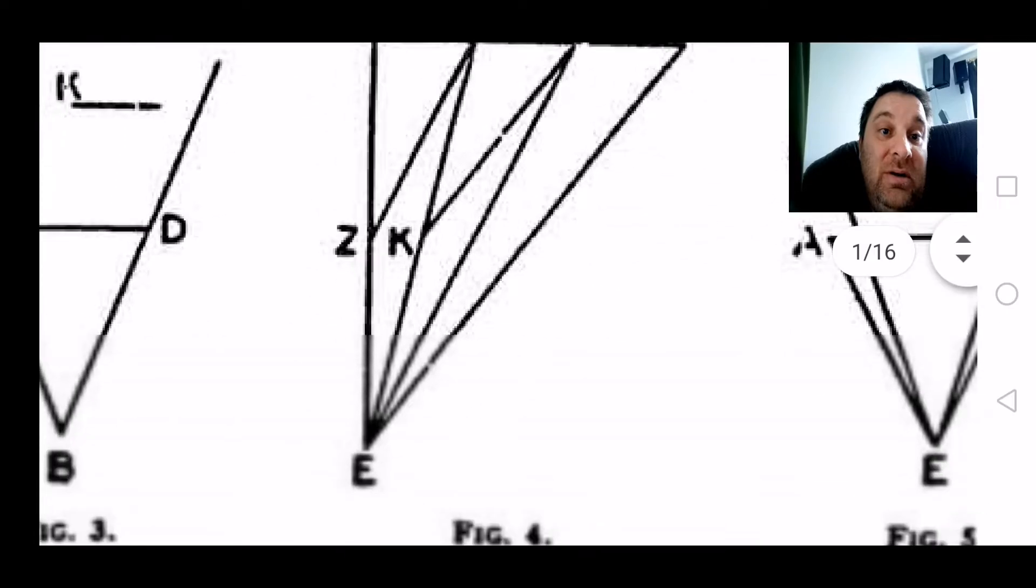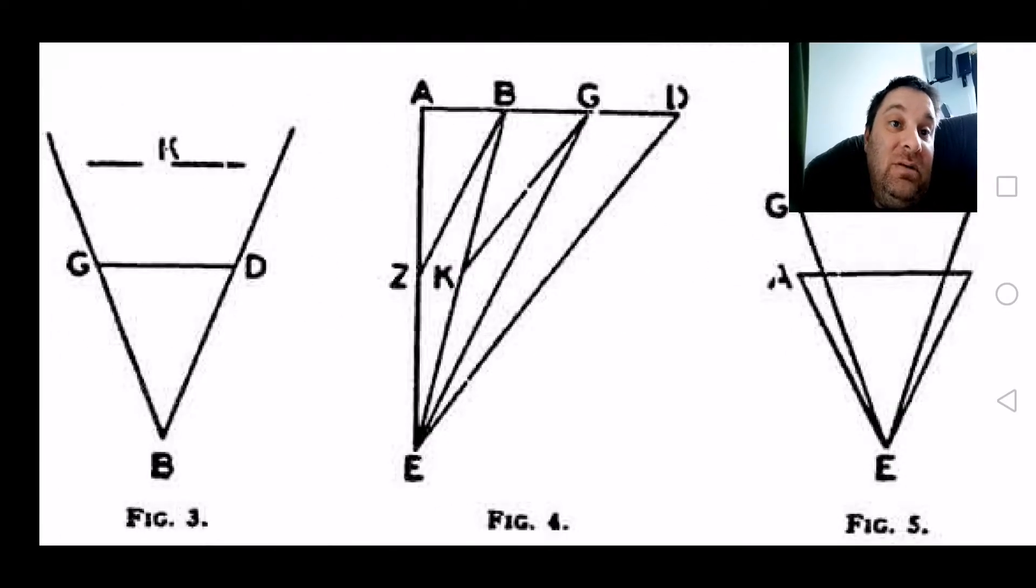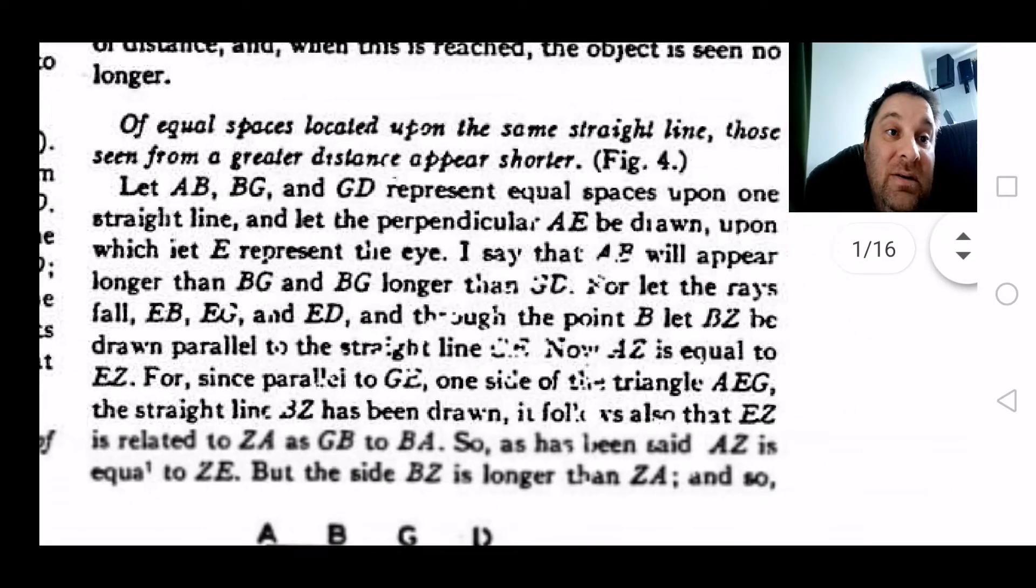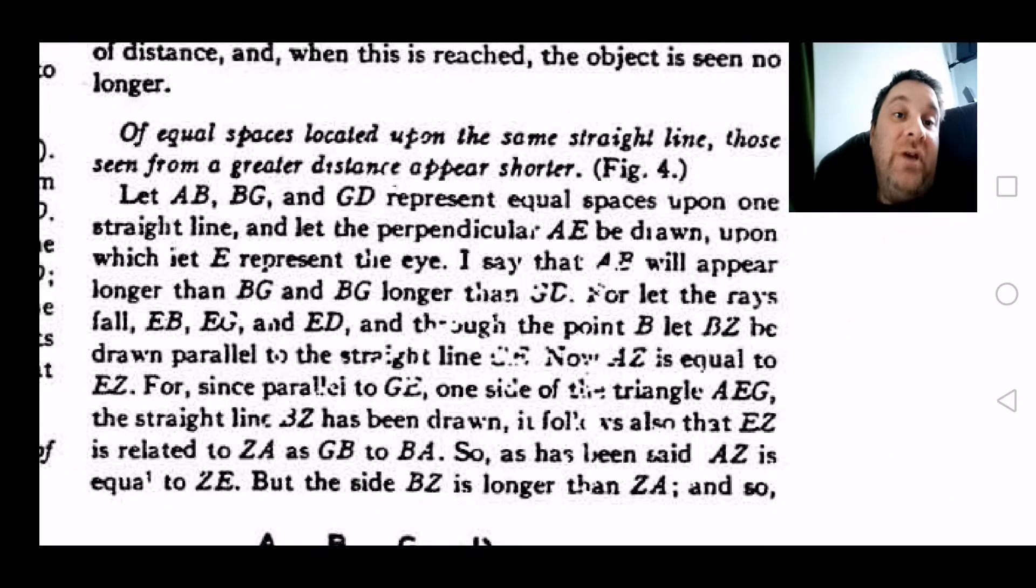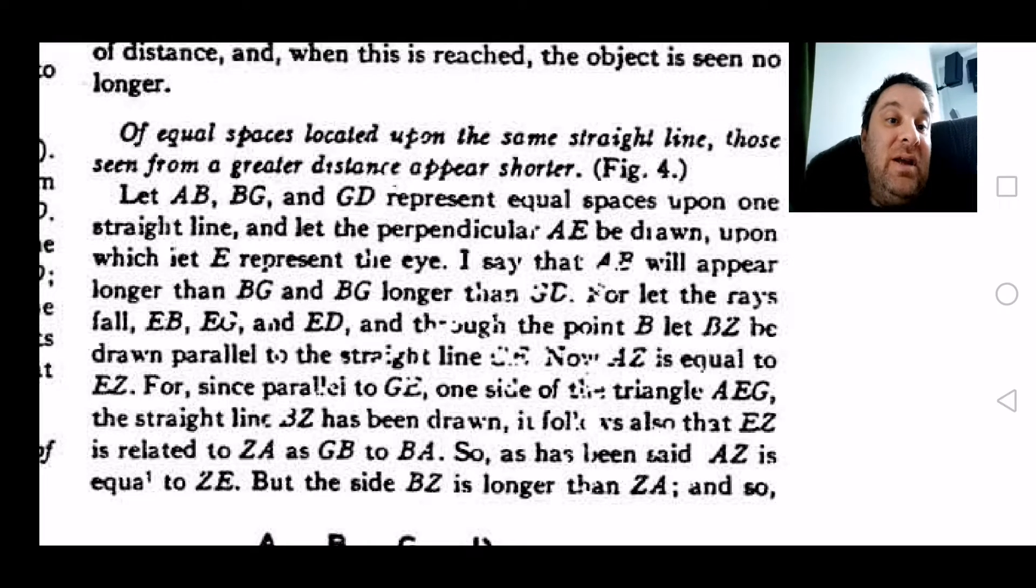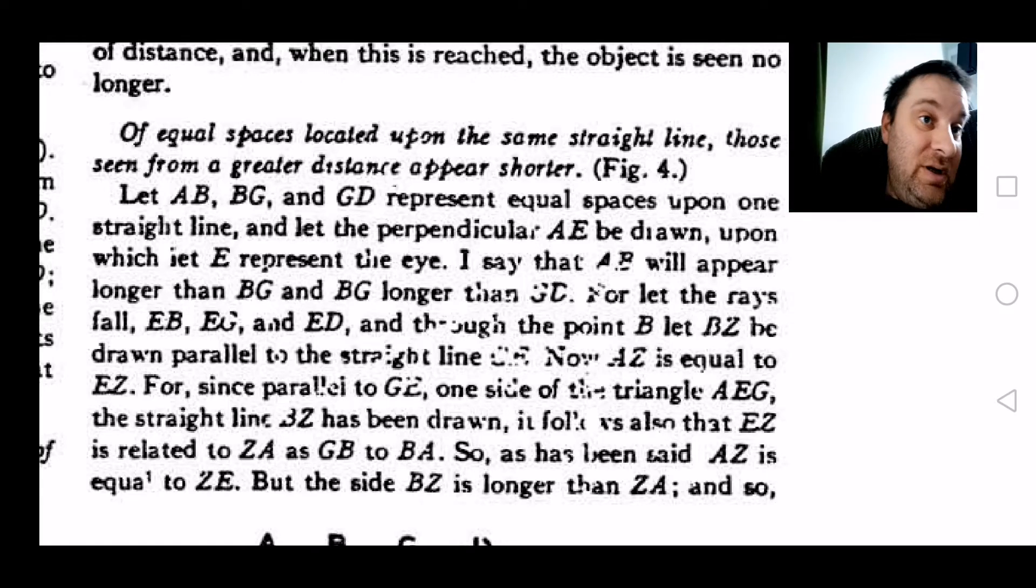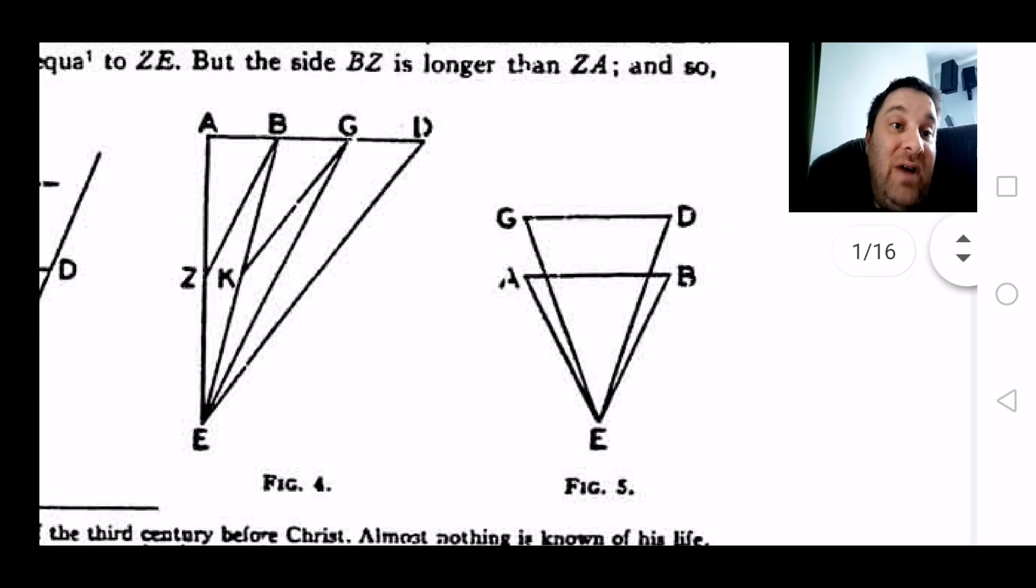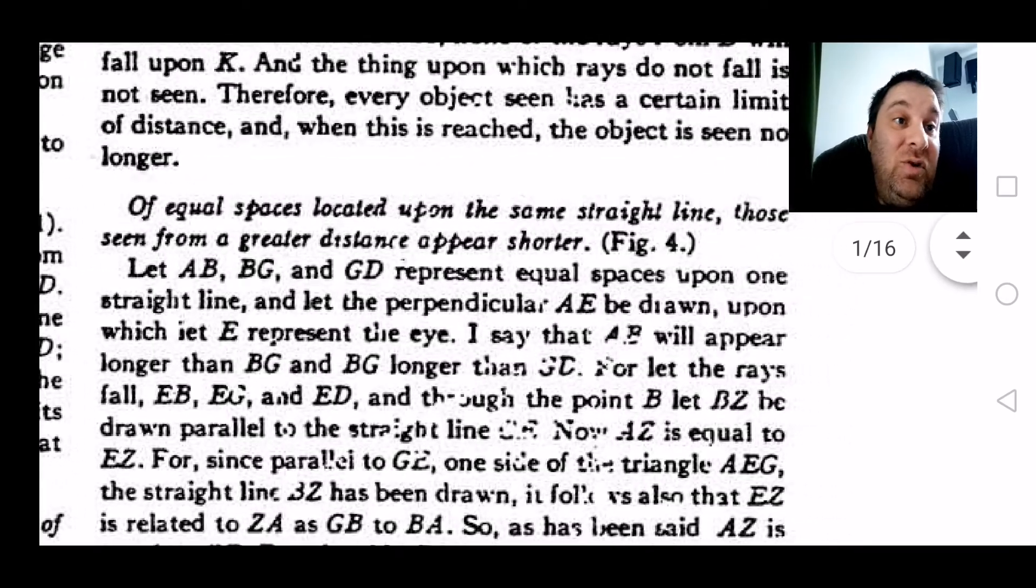And that's figure four. This shows exactly what's going on. Equal spaces located upon the same straight line, those seen from a greater distance appear shorter. So basically, like the lampposts down a long straight road appear to get shorter as they get further away. That's it for this one. I'm going to go on to figure five next time. All right, thank you. Goodbye.